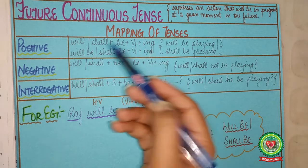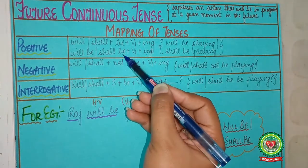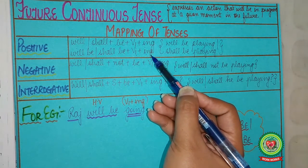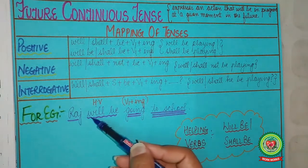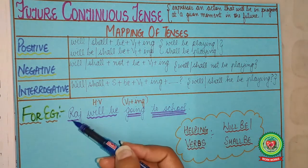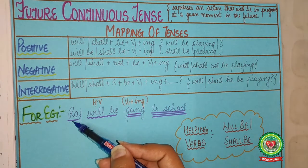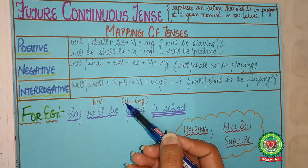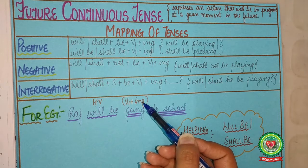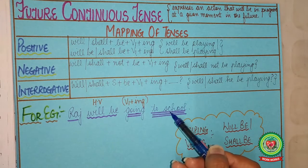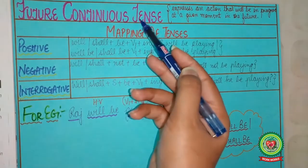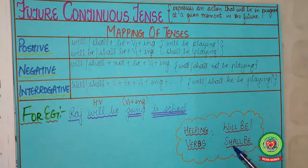Or you can say will be / shall be plus present form of verb plus ing. Now, let us see an example. Raj will be going to school. Who? Raj — so subject. Will be is the helping verb. Going is present form of verb plus ing. To school — so object. Always remember the helping verbs used in future continuous tense are will be and shall be.